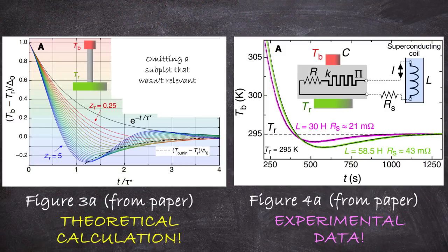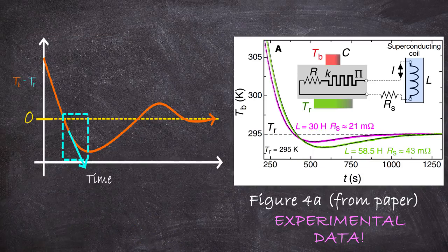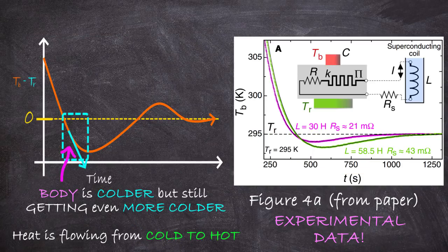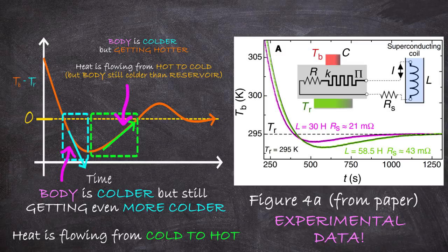Here's the second plot and this is the experimental data from their setup. So they actually made the system and here are the results. And you see, just like the theoretical expectations, that they do indeed achieve a regime where the temperature of the body has overshot the reservoir temperature. And during this period you temporarily have a case where net heat is flowing from the cold reservoir to the hot body. And this is again because they've engineered a sort of inertia to the heat flow so that it temporarily overshoots.